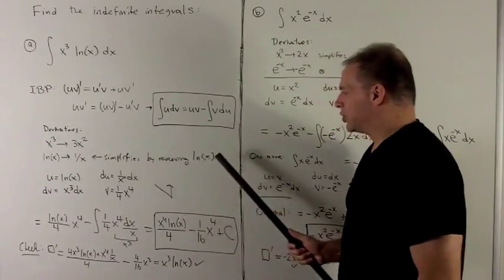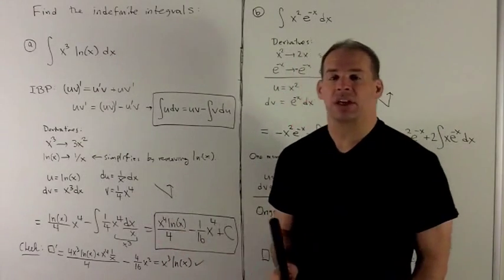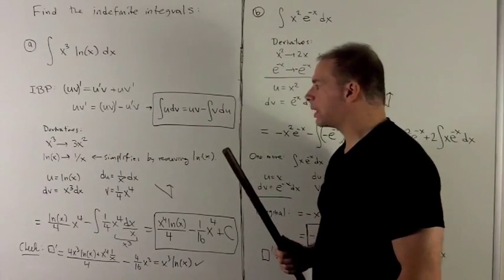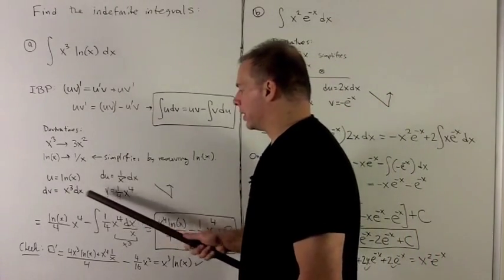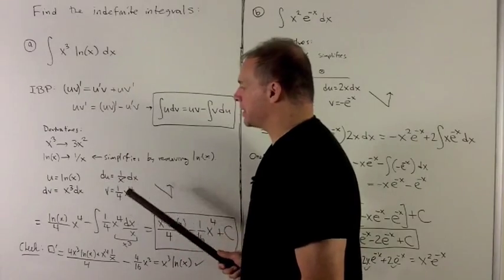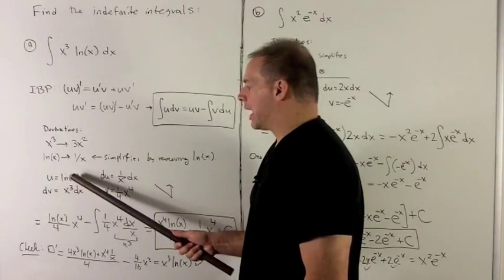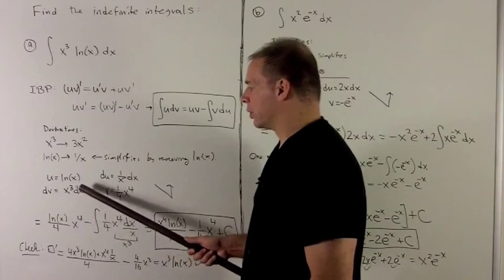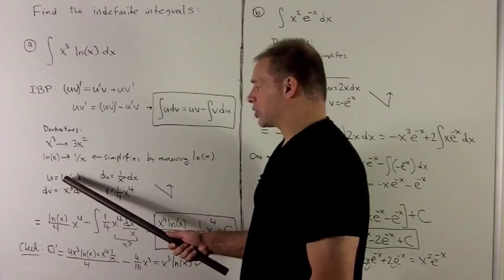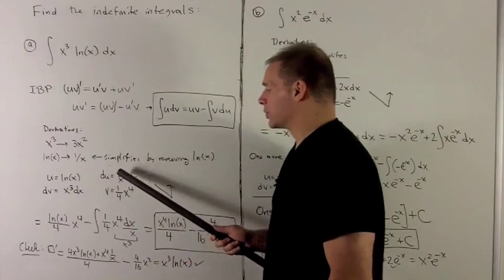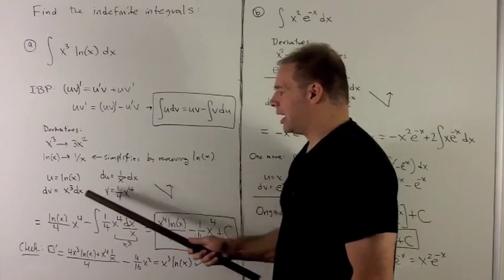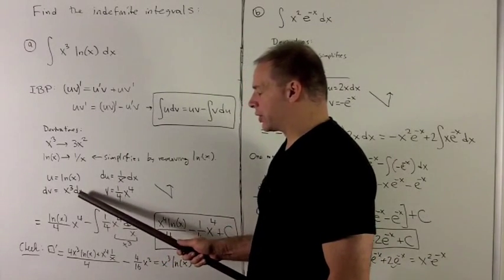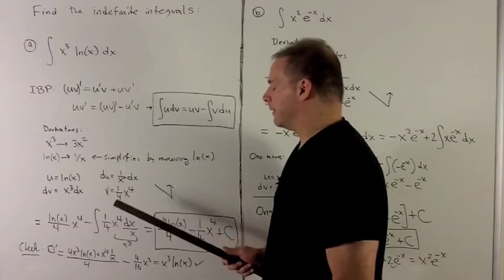If I choose u to be natural log of x, I won't have to integrate it later. Setting up the 2 by 2 table: u equals natural log of x, dv equals x cubed dx. Then du equals 1 over x dx, which is the derivative of natural log of x times dx. And v equals x to the 4th over 4, the antiderivative of x cubed.